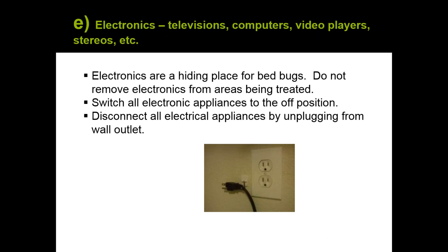For electronics, we unplug everything because bed bugs tend to hide in there. We switch them all to the off position and unplug them. We don't really worry about electronics being damaged by the heat because we're only going up to about 130 degrees — those shipping containers that goods come to our country in can definitely reach more than 130 degrees in the summer. We've never had any issues with people's TVs or anything like that.